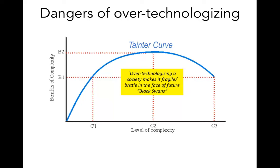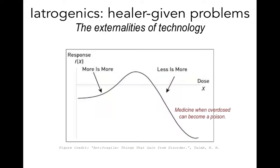The take-home message from the Tainter curve is that if we have a very over-engineered system with a lot of technology, the society becomes very fragile and brittle in the face of future black swans — unpredictable extreme events whose results would be very drastic in a fragile or very complex society.